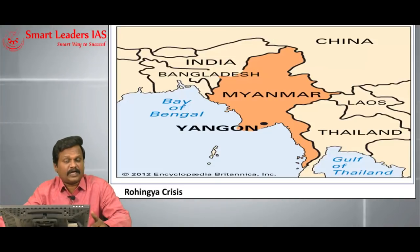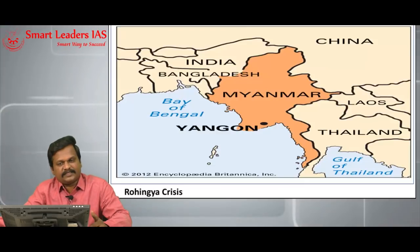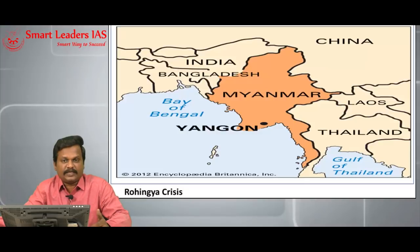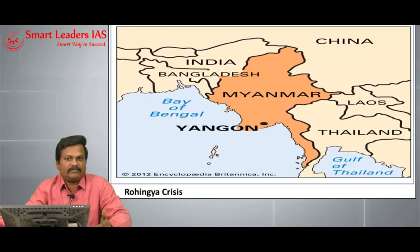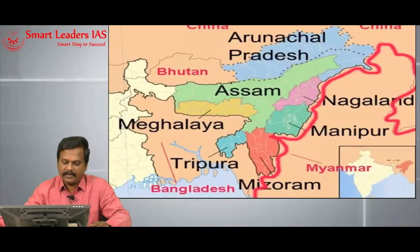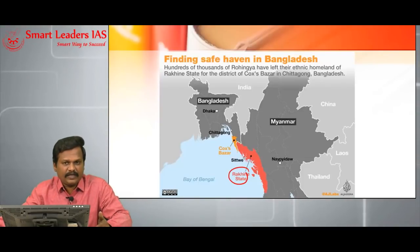India and Myanmar share more than 1,600 kilometers of boundary, and through Myanmar, Northeast India can get easily connected to the ocean. This is very critical for the development of Northeast India under the Act East policy — Myanmar is the gateway for our Northeastern states to get connected to the oceans. This slide speaks about the boundary sharing between Myanmar and India, and the Rakhine state, which is the homeland of the Rohingya population.